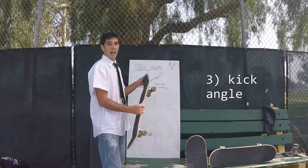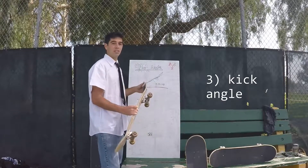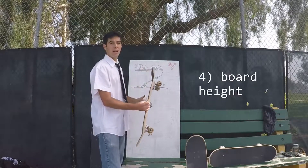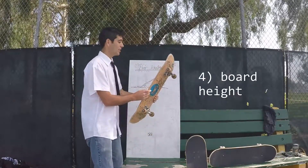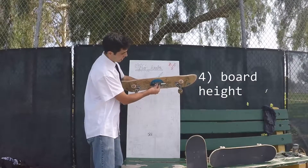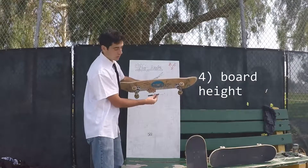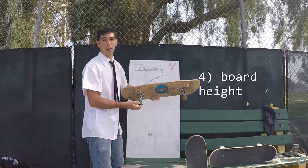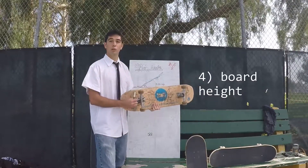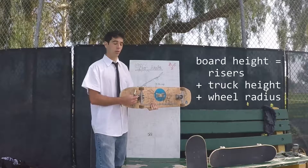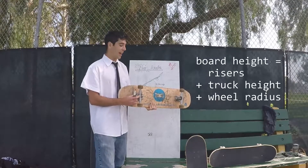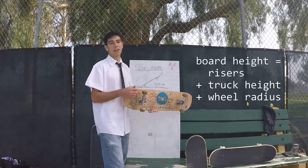And the last feature is the effective board height, which is basically the height of our deck from the ground, and that's made up of our riser pads, if we are using them, truck height, and wheel radius.